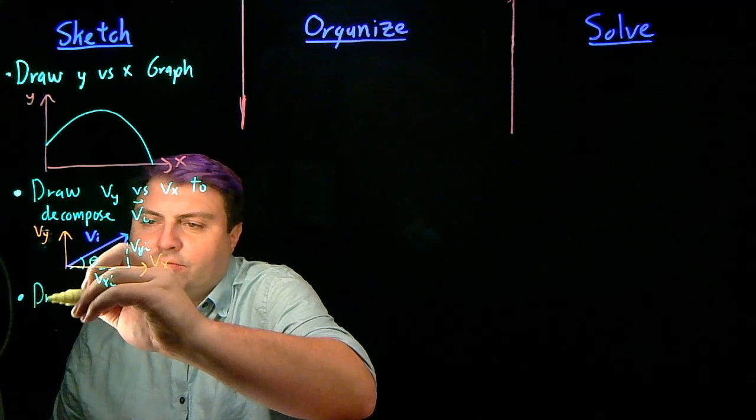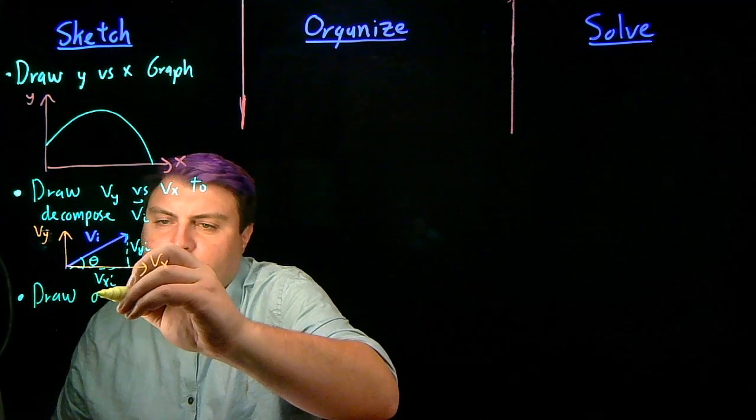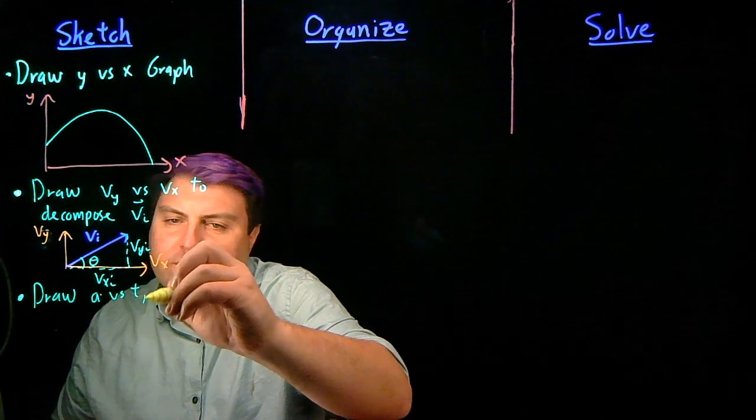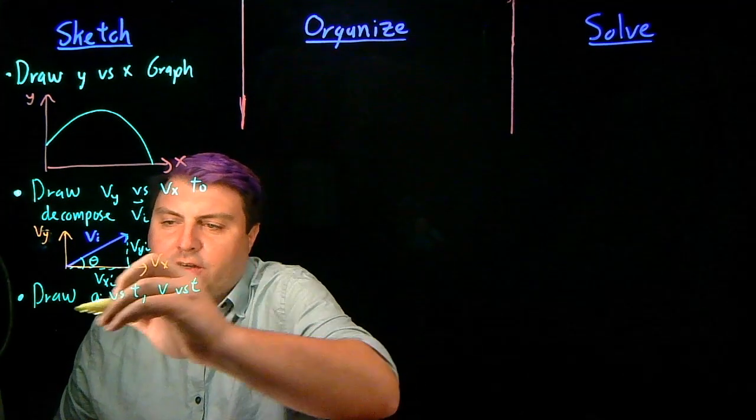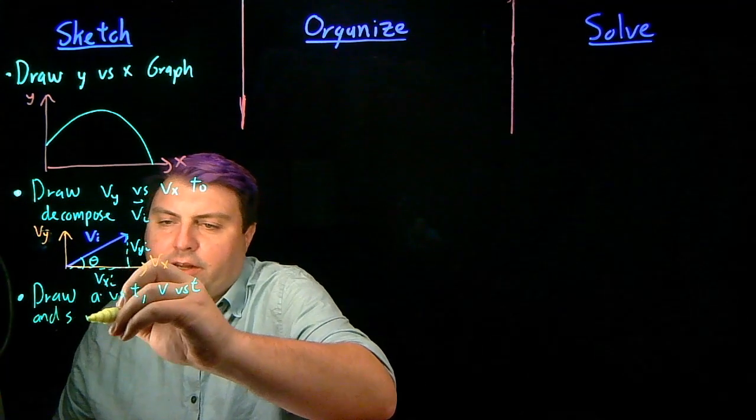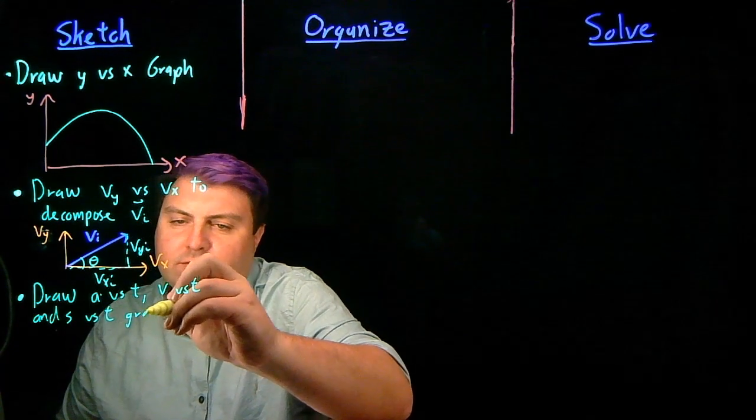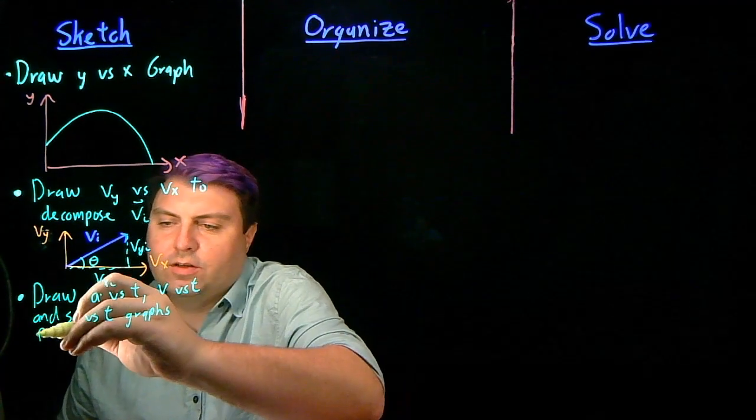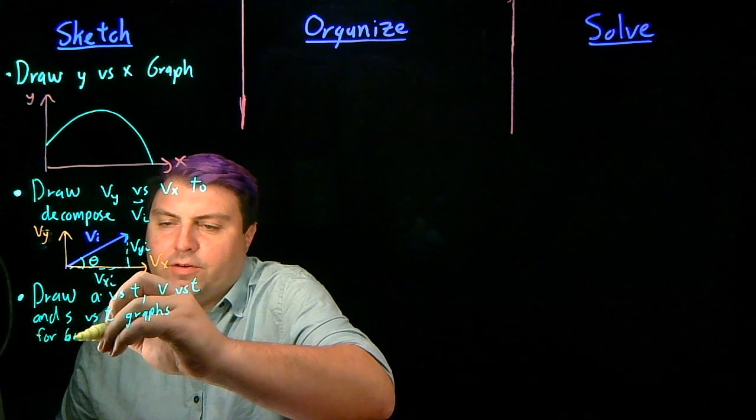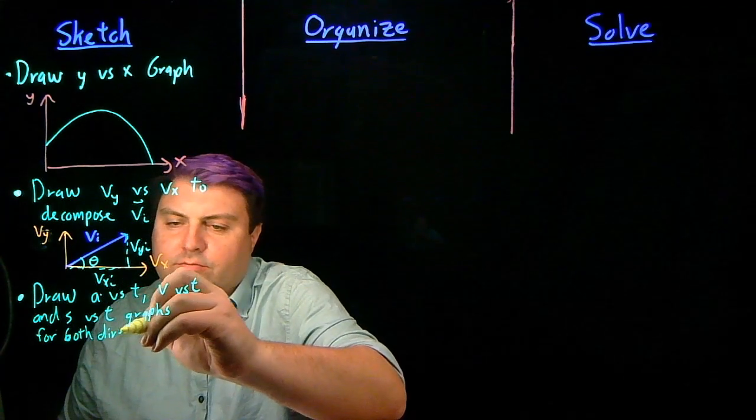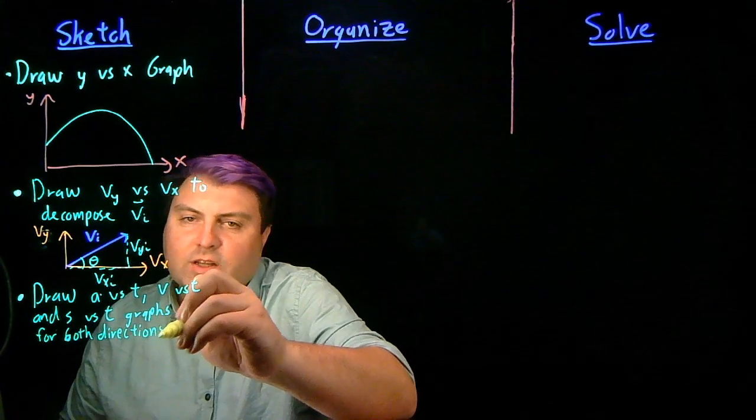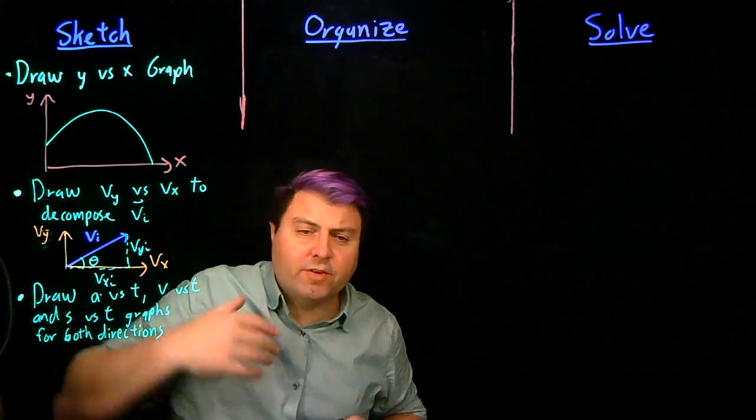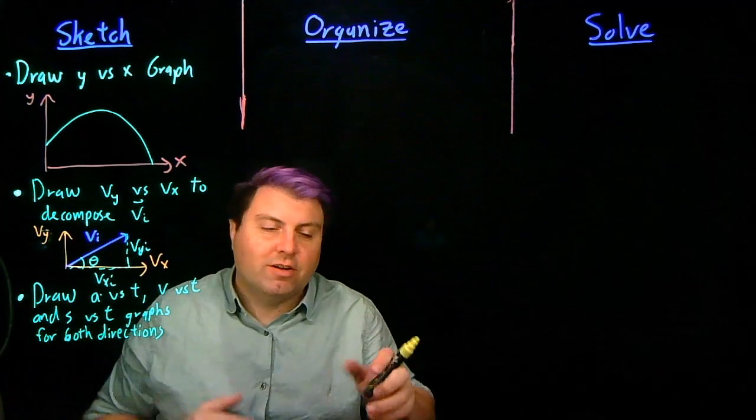Once we have these, then we want to draw a-versus-t, v-versus-t, and s-versus-t graphs for both directions. We have some experience with this from one-dimensional kinematics, so we don't need to draw all that.